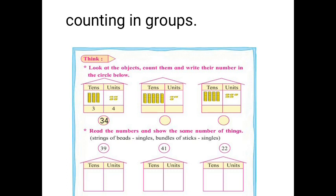In the next part, read the numbers and show the same number of things. The first one is 39. What is 39? 30 and 9. In 30, you can make three groups of tens, so in tens draw three groups. And in units, draw nine single beads. Like this, solve this question.